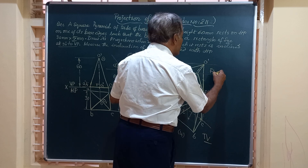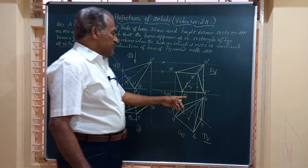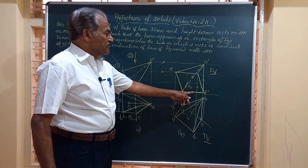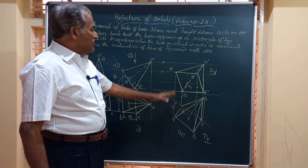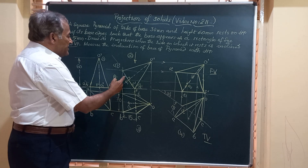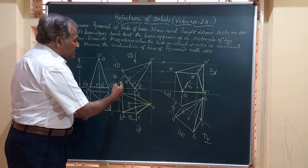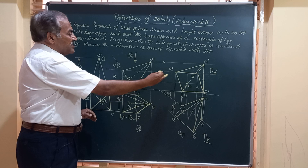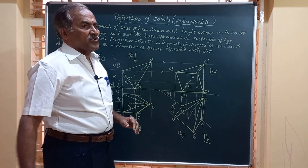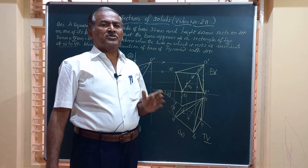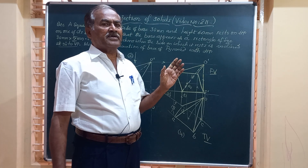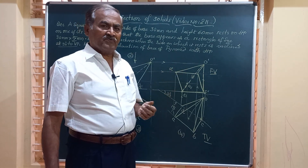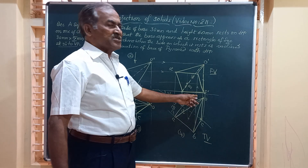The base of the solid is nearer to the observer, so all four corners of the base are visible. Join A'B', B' to C', C' to D', and D' to A' to form the complete base in the front view. Connect the vertex O' to A', B', C', and D'. When joining O' to D', it intersects another line — since the other line is already drawn as a full line, O' to D' is shown as a dotted line, indicating it is not visible. This final front view shows the pyramid resting on edge CD on HP, with the base making angle theta with HP.